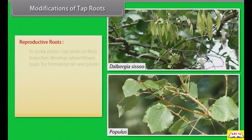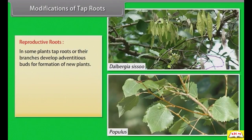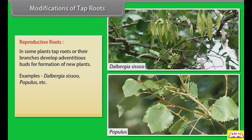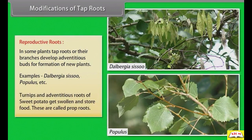Reproductive roots: in some plants, tap roots or their branches develop adventitious buds for the formation of new plants. Examples: Dalbergia sissoo, Populus, etc. Turnips and adventitious roots of sweet potato get swollen and store food.